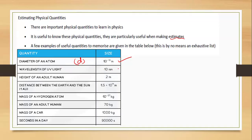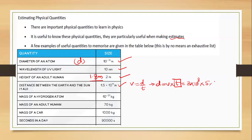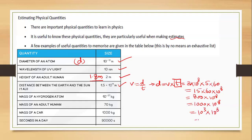The distance between Earth and the Sun can be calculated using d = v × t. The speed of light is 3 × 10⁸ m/s, and light takes about 5 minutes to reach us from the Sun. So: 3 × 5 × 60 × 10⁸ = 15 × 60 × 10⁸ ≈ 900 × 10⁸. Rounding 900 to 1000 gives 10³, so the total is 10³ × 10⁸ = 10¹¹. The order of magnitude of the Earth-Sun distance is 10¹¹ meters.